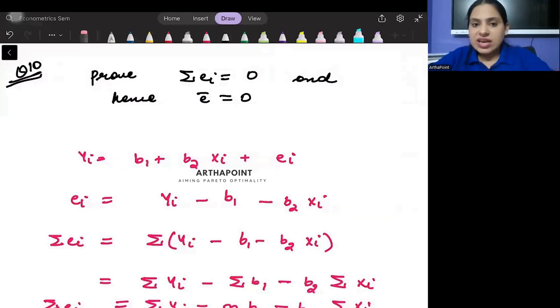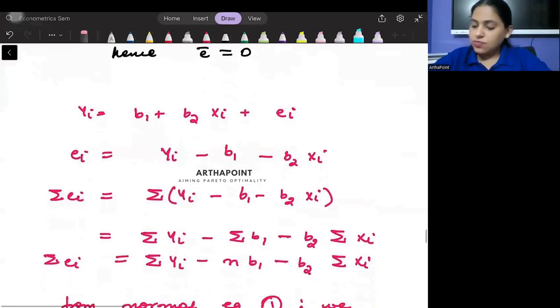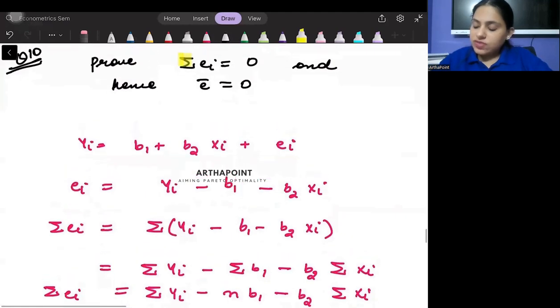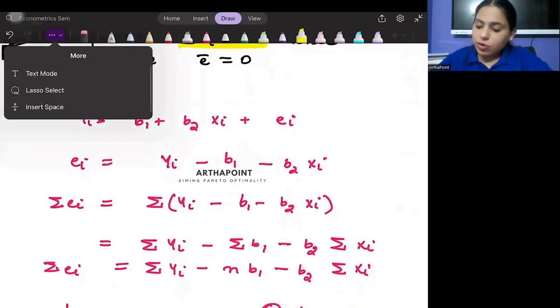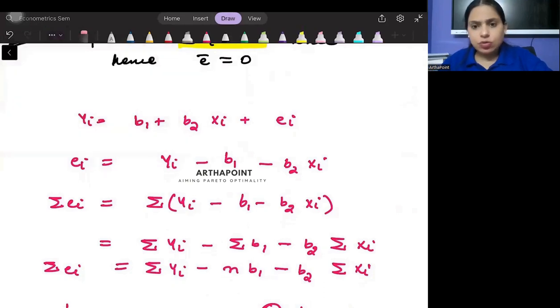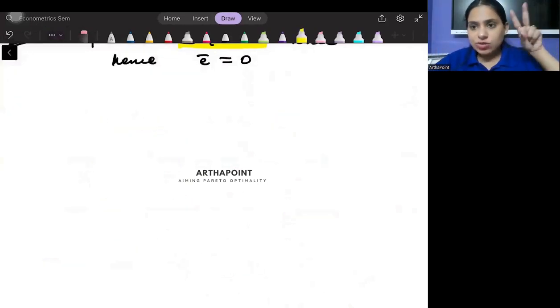This is proof that summation ei is 0 and hence e bar is 0. Whenever you need to prove that the sum of the error term is 0 at any point of time, in multiple proofs I need you to remember the two normal equations that we will be continuously using.